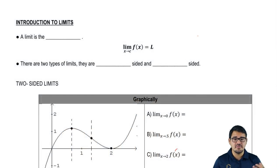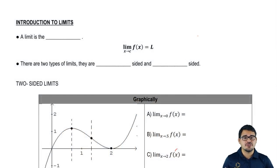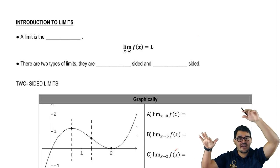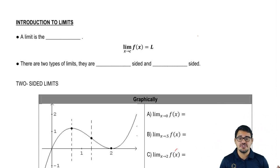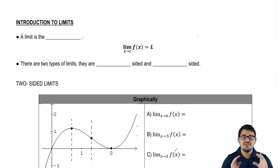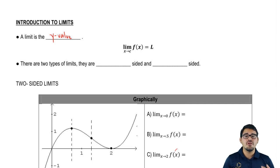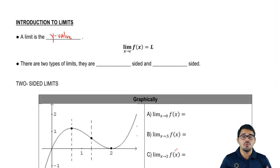So a limit is the blank, right? A professor spent like two or three hours speaking about all these crazy formulas — three-hour proofs, all these Greek signs like sigma and theta. What we're trying to do is just simplify what a limit is. I'm just going to tell you that a limit is the y value. That's all it is. Whenever we're looking for limits, we're looking ultimately just for a y value.